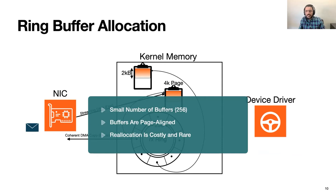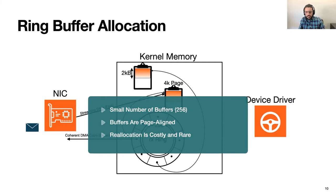First, incoming packets are stored into a small number of buffers. Second, these buffers are page-aligned. Third, the driver tends to reuse these buffers throughout its lifetime, since reallocation is costly. With this information we can exploit it to reduce the probe size. Here we only monitor 256 cache sets — the ones that can correspond to the first block of any possible page-aligned buffer. In this graph, each vertical line shows activity on one of these 256 cache sets, where a white dot shows detected activity and a black dot means the set is not touched.